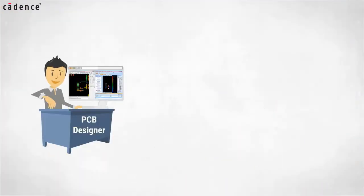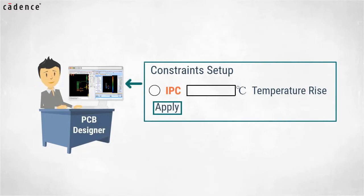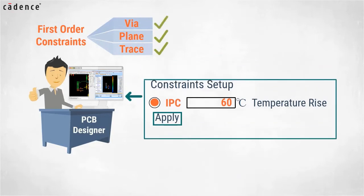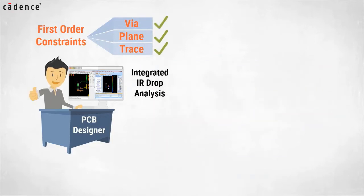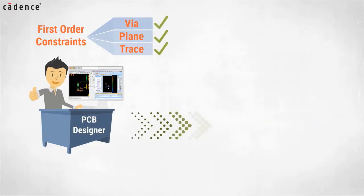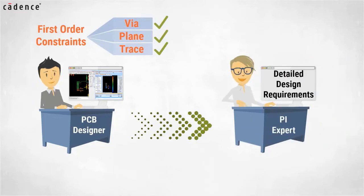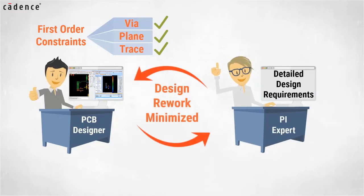Instead, with IPC calculations built into the design and analysis environment, first-order constraints can be easily developed and verified with integrated IR drop analysis by the PCB designer. When more detailed design requirements come later in the process from the PI expert, design rework will surely be minimized.